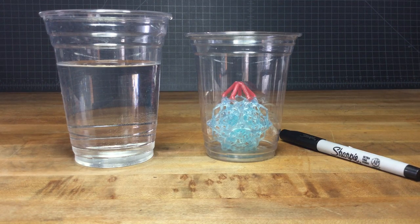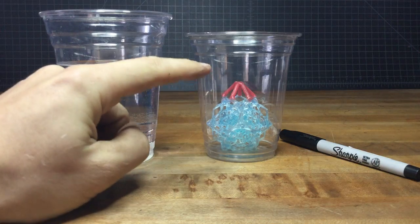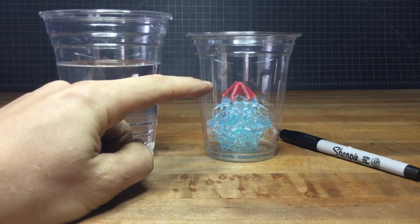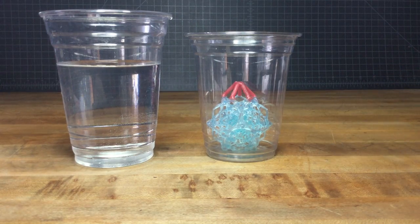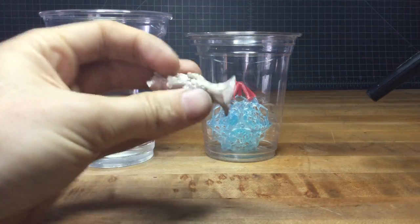We're looking at Archimedes' Principle in that we can fill our vessel with water and then remove our part and then match that same volume with some material like scrap metal.